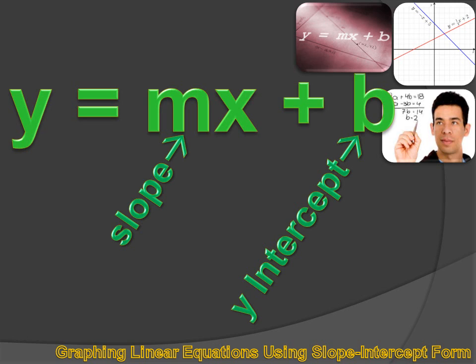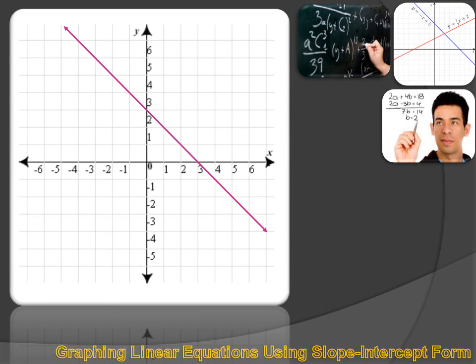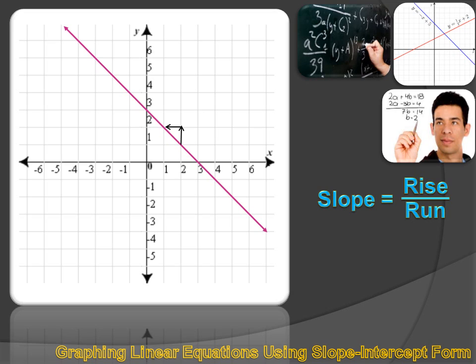If I know the y-intercept and I know the slope of the line, I can graph it. It makes sense to review slope and intercept quickly before we go further. Slope is rise over run. I take any two points on the line and find out how much I rise and how much I run to get from the first point to the second point. If I make that division — rise divided by run — I'll know the slope of the line.